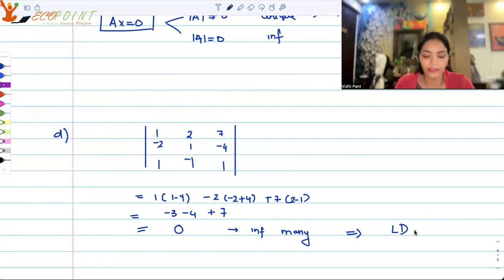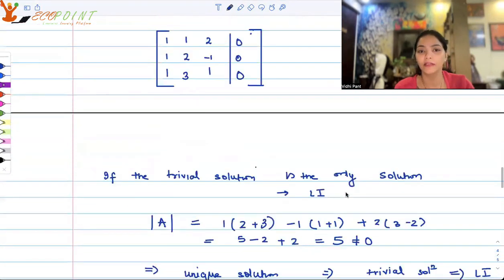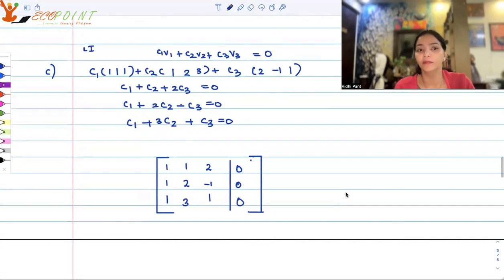So the correct answer, guys, would be option C, wherein you are getting linearly independent vectors. These three vectors are creating a basis for the vector space R³.